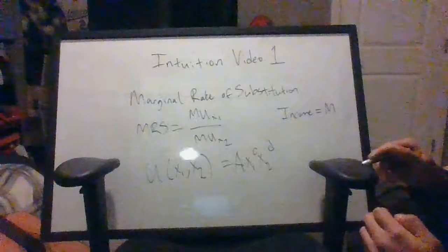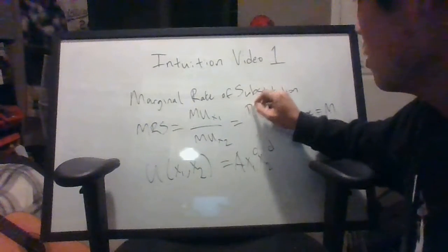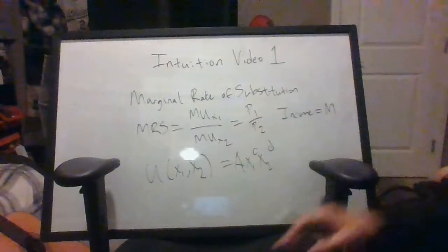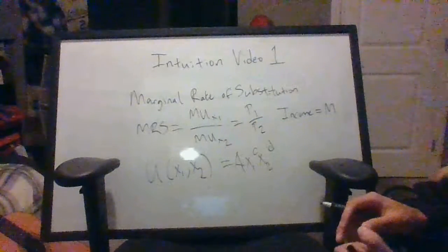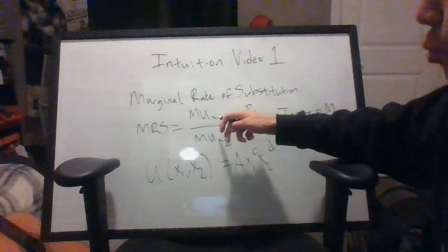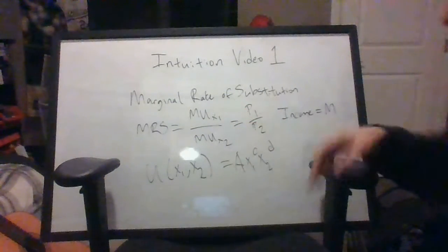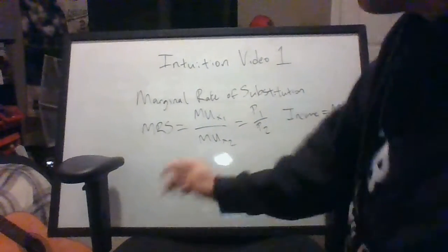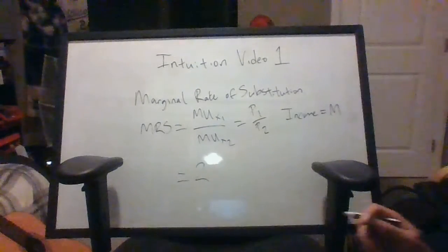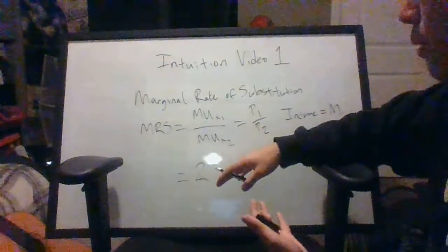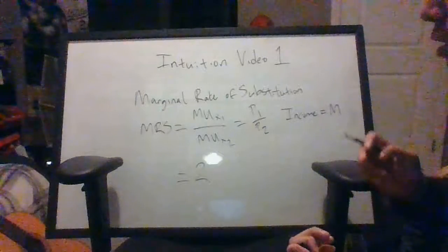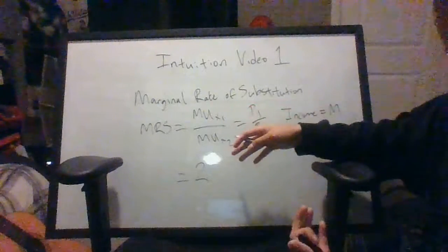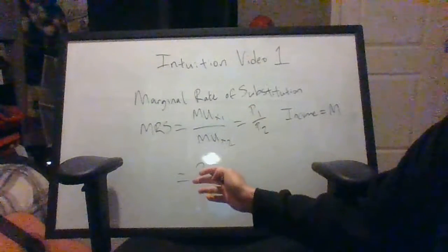So the reason why we are setting this equal to p1 over p2 in order to find the optimal amounts of x1 and x2 is think about it from this perspective. Say that I'm offering you either one more unit of x1 or one more unit of x2. Let's say for example that my MRS is equal to 2. This is just a made-up number that I'm coming up with. And of course, we know that marginal rate of substitution is going to be different depending on how many units of x1 and x2 that we already have, but let's say that at the moment it's equal to 2.